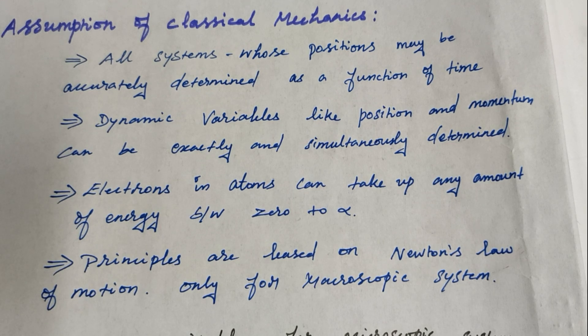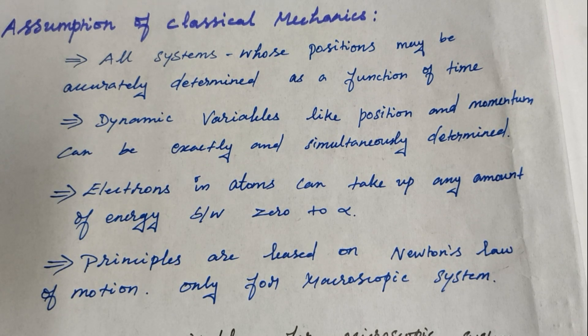In classical mechanics, dynamic variables like position and momentum can be exactly and simultaneously determined. But in quantum mechanics, position and momentum cannot be exactly and simultaneously determined, according to the uncertainty principle.